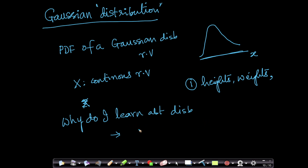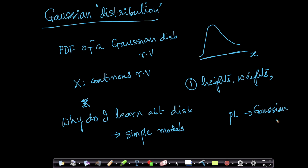In short, distributions are very simple models of natural behavior. For example, if you tell me that your petal lengths of a set of flowers follow Gaussian distribution, I can tell you a bunch of properties about your petal lengths without even having measured any of them. It's a very simple model to summarize all the information about a random variable or a physical measurement like a length, height, or weight.